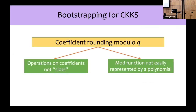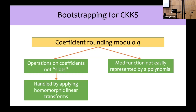Bootstrapping for CKKS essentially comes down to performing coefficient rounding modulo q. There are two challenges here. The first is that the CKKS scheme operates on ciphertext slots and not on the coefficients of the ring polynomial — however, this can be handled by applying homomorphic linear transforms. The second challenge is that the mod function is not easily represented by a polynomial, and this is the focus of this work.